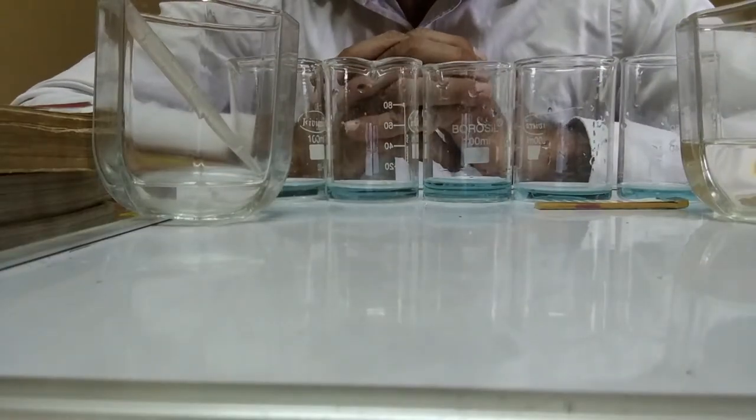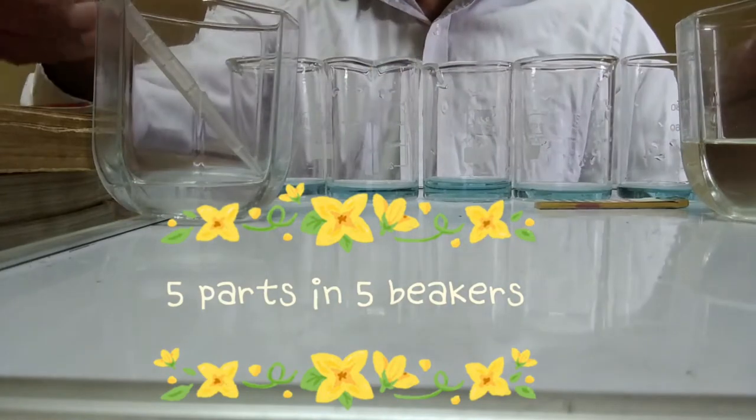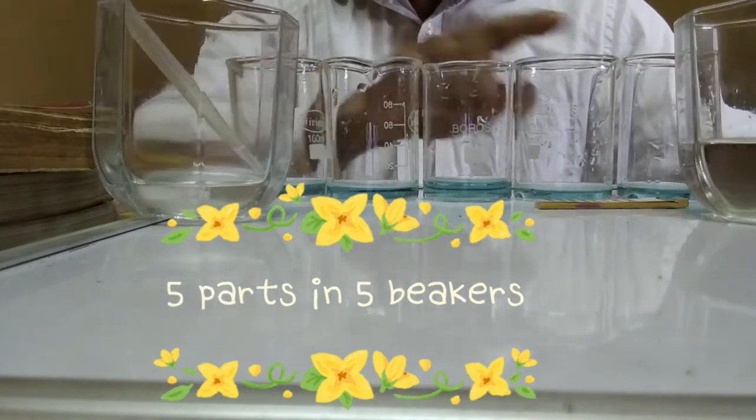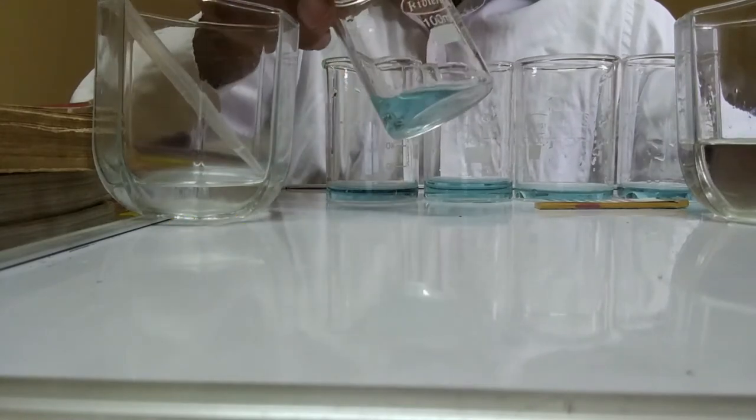Here I have divided the clitoria ternacea extract into 5 parts in 5 beakers: 1, 2, 3, 4, and 5. This is how the colour looks like, cyan blue.